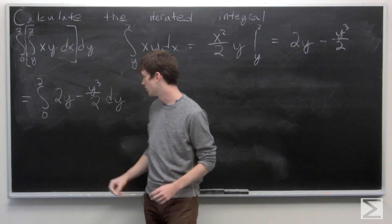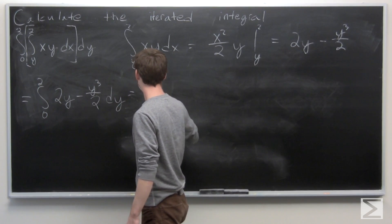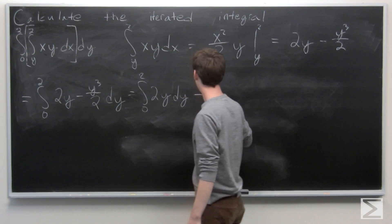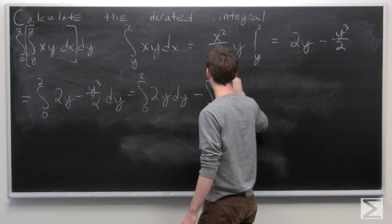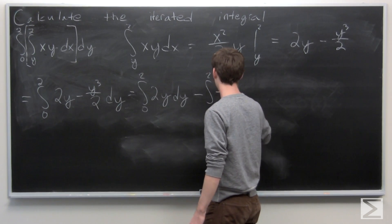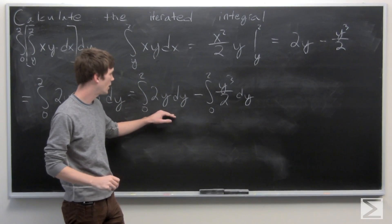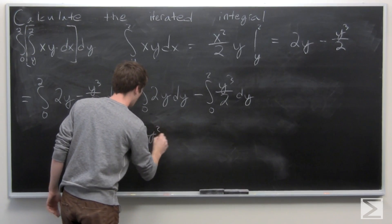We're taking the integral from 0 to 2 of 2y dy which is y squared.